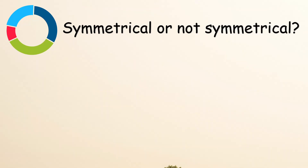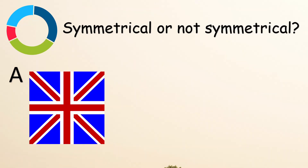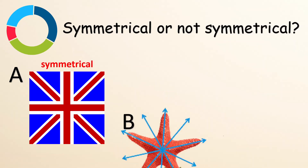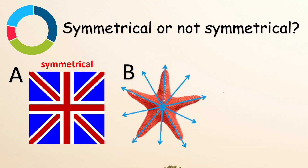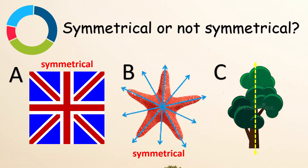Let's identify if each figure is symmetrical or not. This figure — yes, it is symmetrical. How about letter B? Look at the line of symmetry — correct, it's also symmetrical. How about letter C, the tree? Correct, it is not symmetrical, or it is asymmetrical. We cannot have two identical faces or parts.